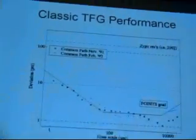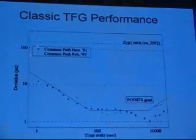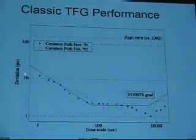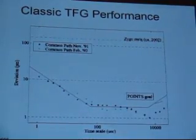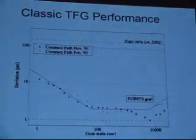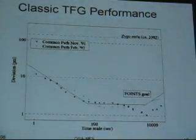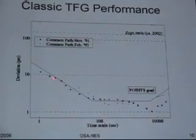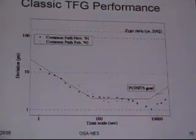Performance shown on the horizontal axis is averaging time from 1 to 10,000 seconds; on the vertical axis is distance in picometers — 1, 10, 100. You can see that for minutes to hours, we're obtaining 2 picometers stability, and it degrades a bit at shorter times, and we need to improve that a little bit for this experiment.